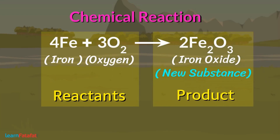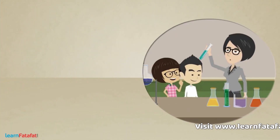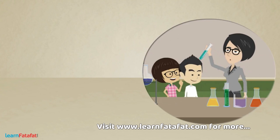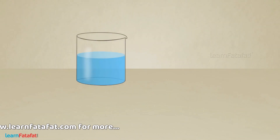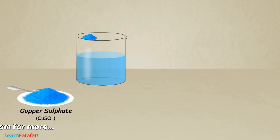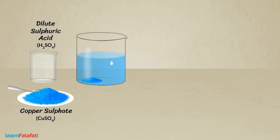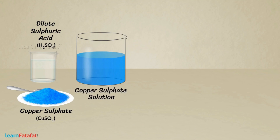Take another example for understanding this more clearly. If you want to perform this activity, take help of your teacher. Please don't do it yourself. Take some water in a beaker, dissolve a tablespoon of copper sulphate in it, and add a few drops of dilute sulphuric acid to it. It will form a blue coloured solution — copper sulphate solution.